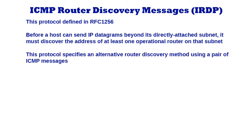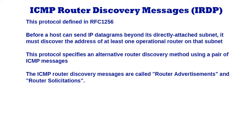This protocol specifies an alternative router discovery method using a pair of ICMP messages for use on multicast links. It eliminates the need for manual configuration of router addresses and is independent of any specific routing protocol. The ICMP router discovery messages are called router advertisements and router solicitations.